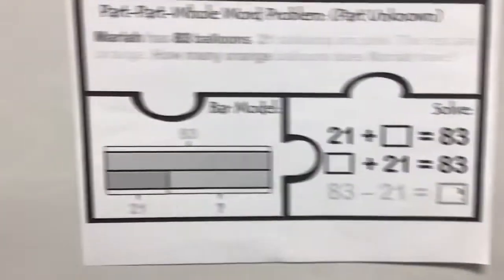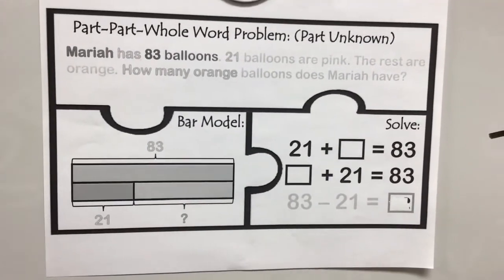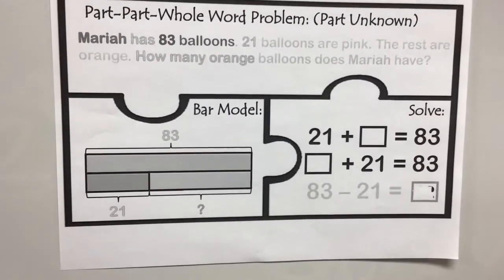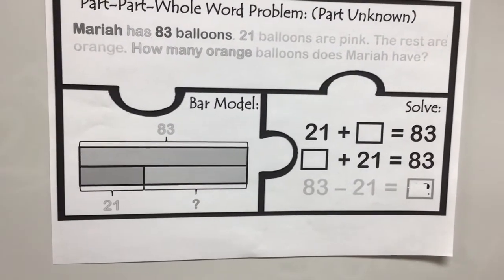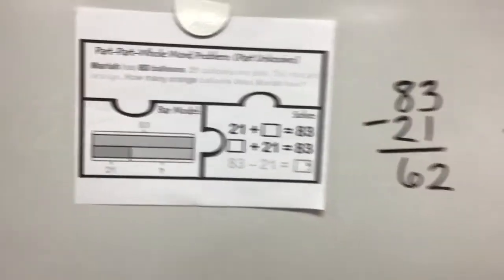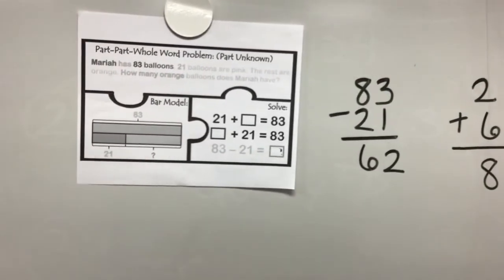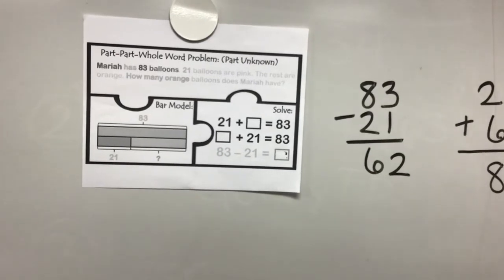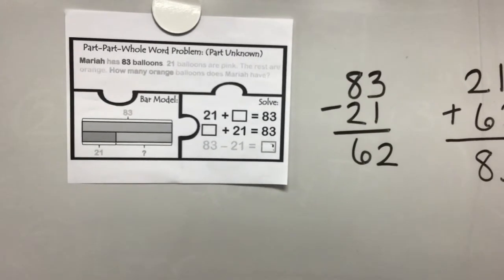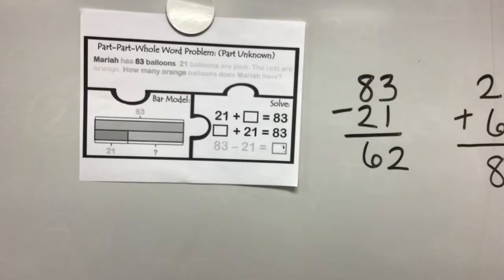And I can look right over here and double check. So that means if she has 83 all together, and 21 of them are pink, the rest are orange — the rest would be 62. That means she has 62 orange balloons. Now you're going to try one of these on your own.